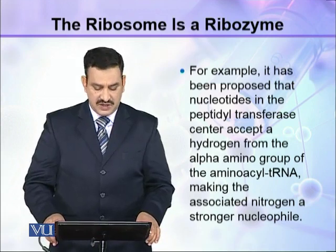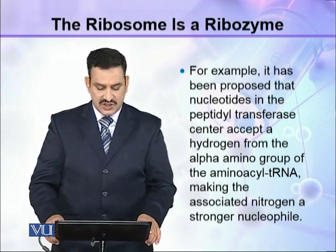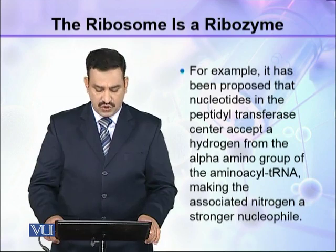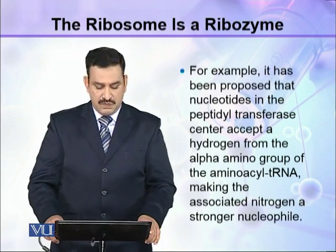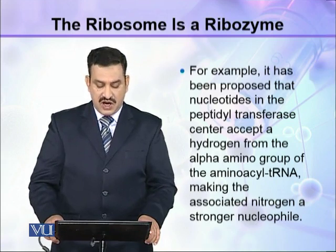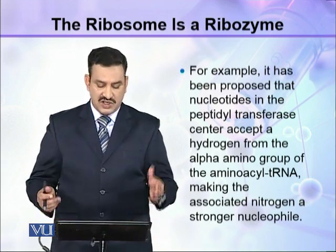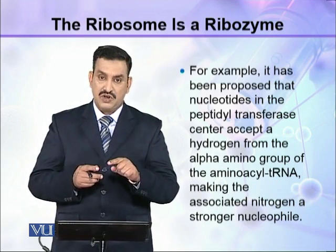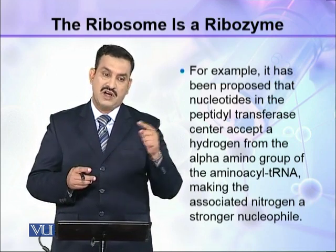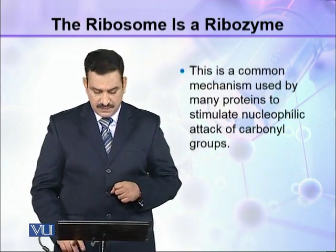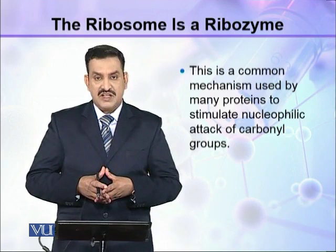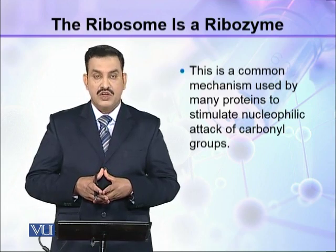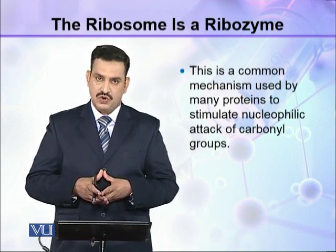For example, it has been proposed that nucleotides in the peptidyl transferase center accept a hydrogen from the alpha amino group of the aminoacyl-tRNA, making the associated nitrogen a strong nucleophile. This is a common mechanism used by many proteins and enzymes to stimulate nucleophilic attack of carbonyl groups.